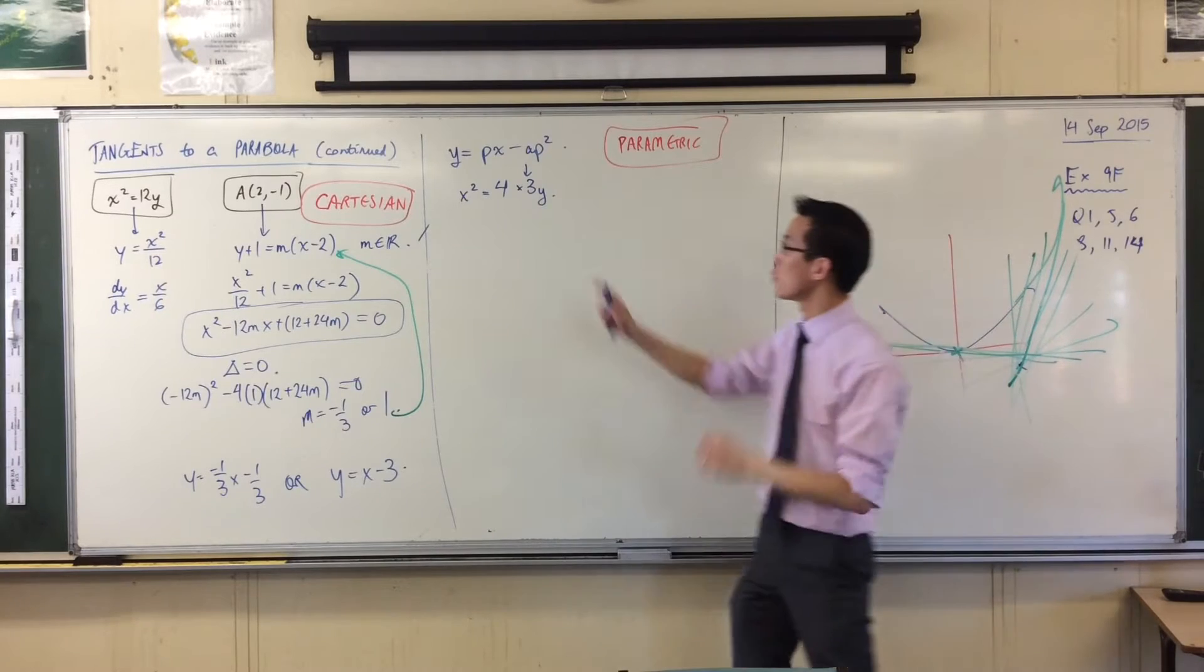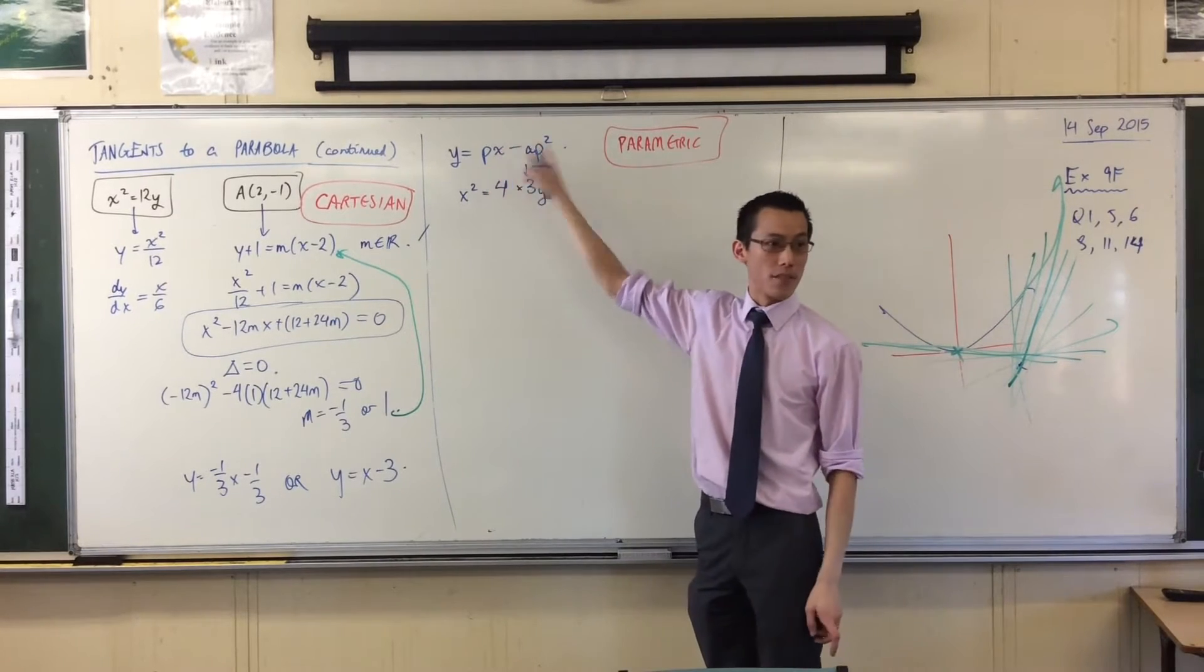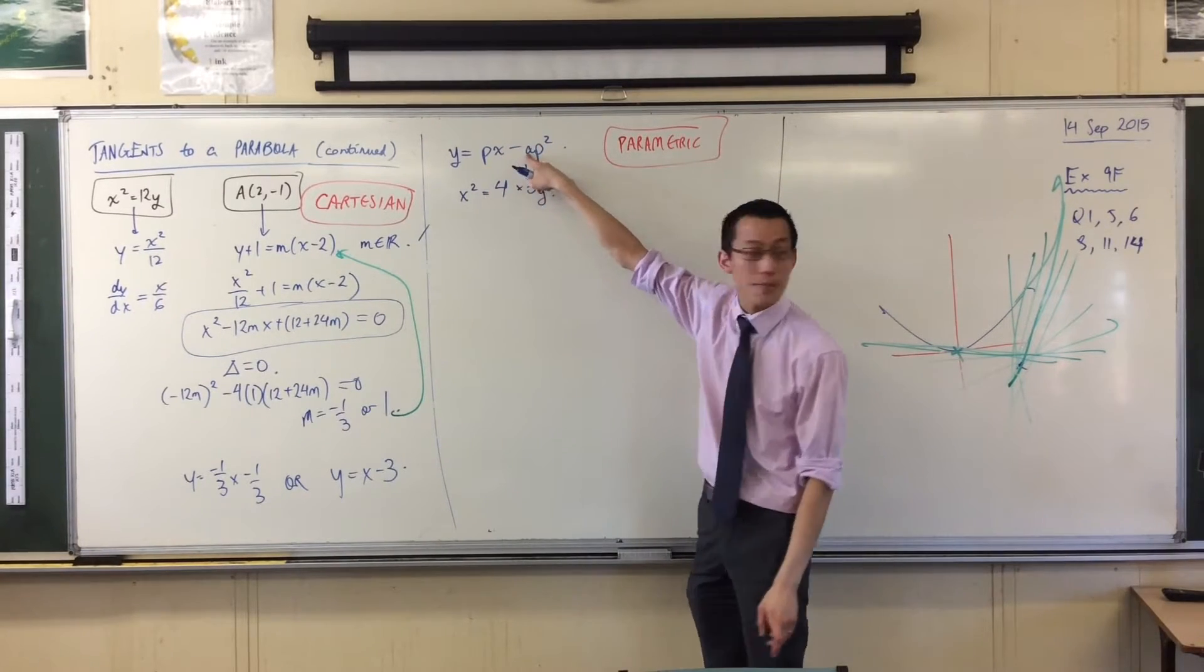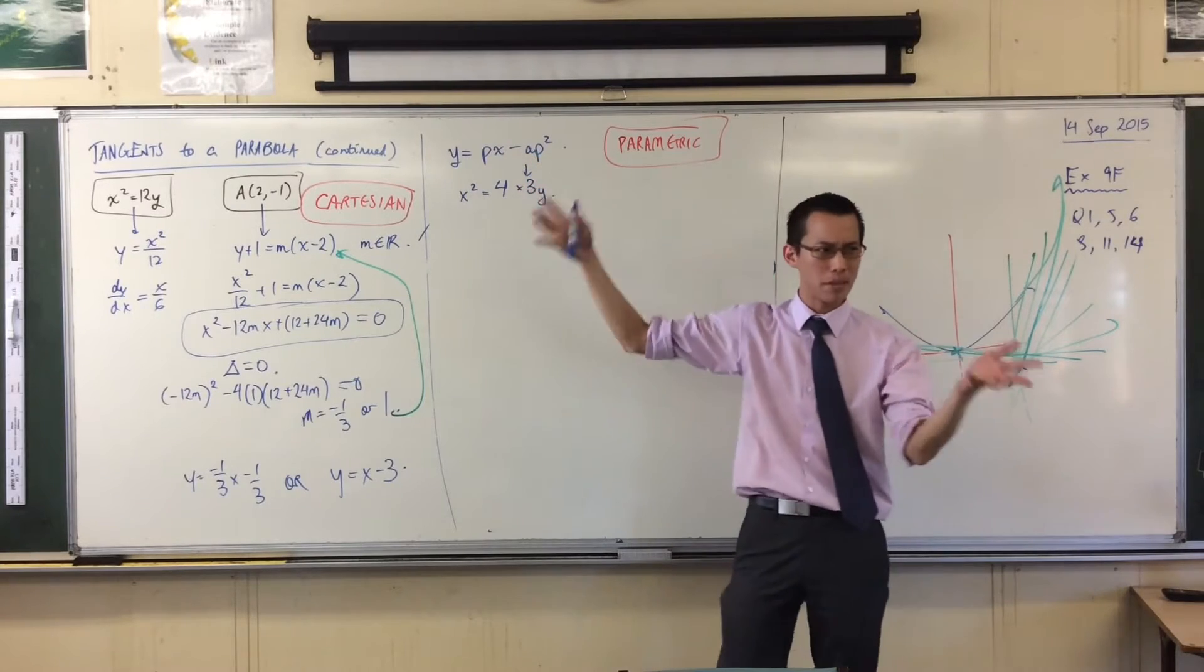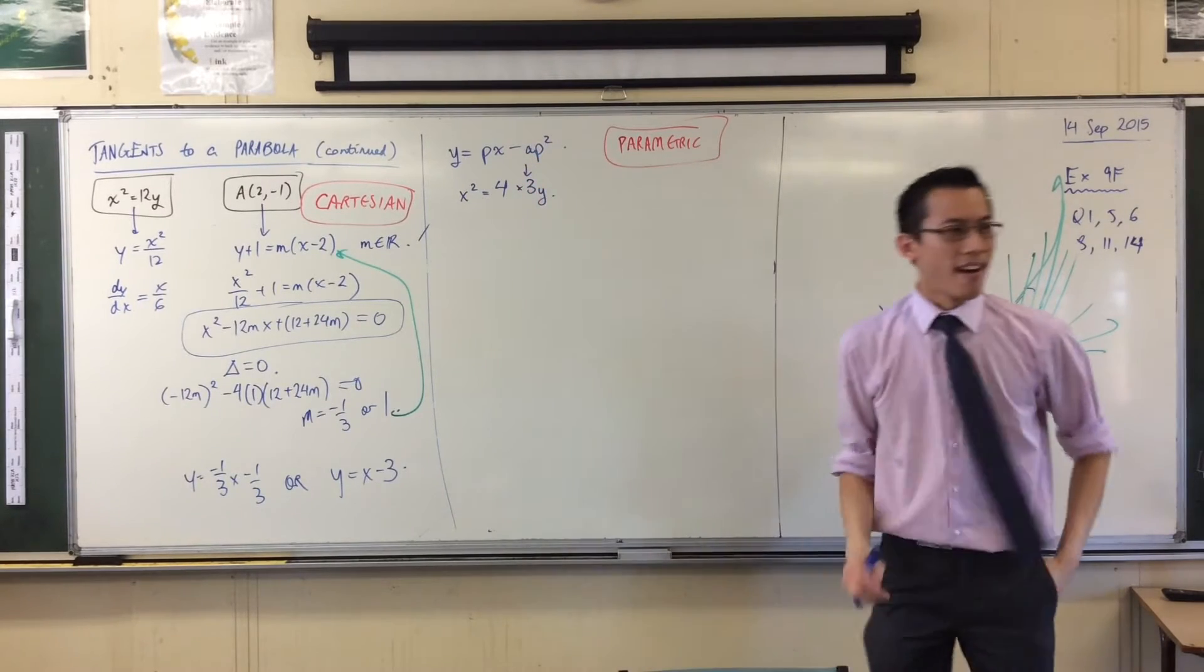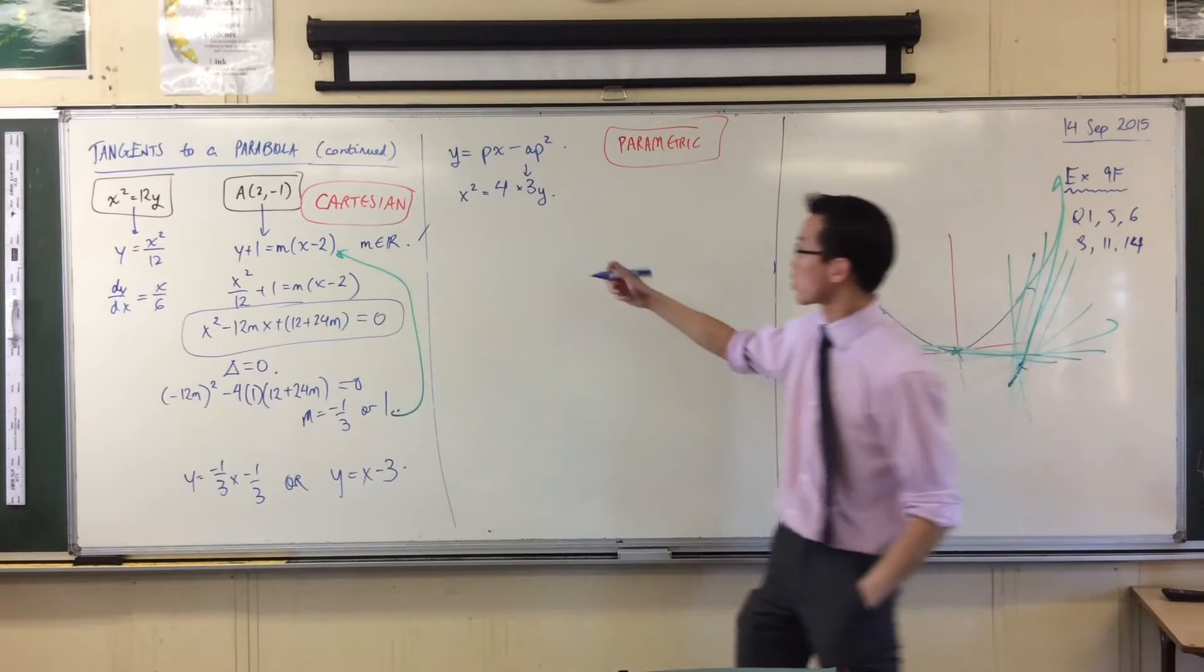I'm going to need that in a moment when I use my equation of a tangent in parametric form. Because there's the focal length. I need the focal length for it. But it's not hard. A is 3. A is equal to 3.